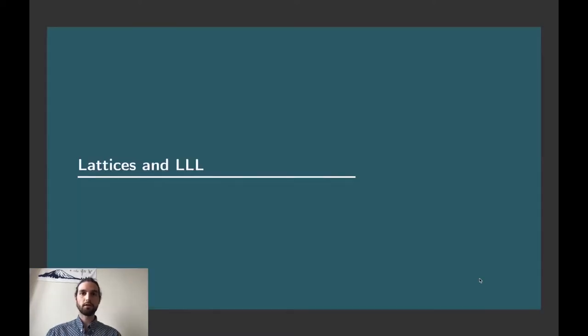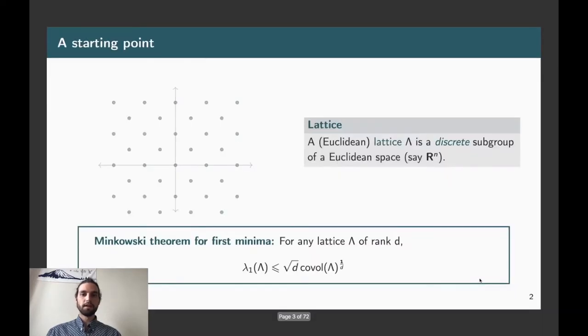First of all, a bit of recall on lattices and the celebrated LLL algorithm. A lattice is a discrete subgroup of a Euclidean space, for instance R to the N. It means that we get a bunch of regular space points in the space which are endowed with a group structure. Another way of saying it is that we can take a free Z module and endow it with some inner product on the ambient space which is your lattice tensorized by R.